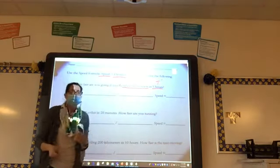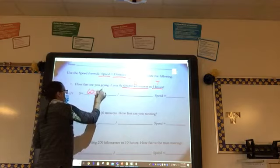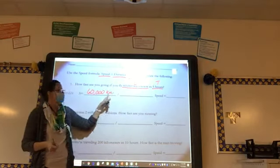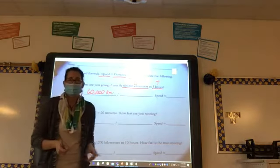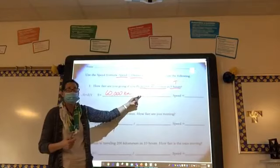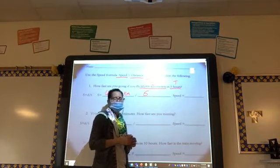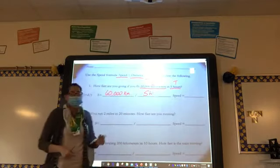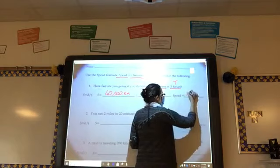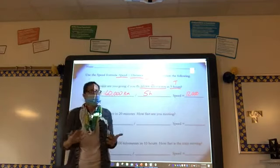What do we need to put first? The distance — 60,000 kilometers. The abbreviation for kilometers is KM. What do we need next? Five hours, because that is the time. And how should we abbreviate hour? An H or an HR — either one is fine. So if we plug this into our calculator, what are we going to get? 12,000.